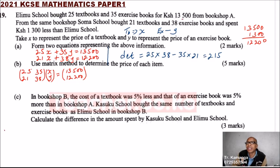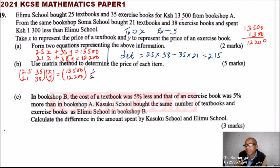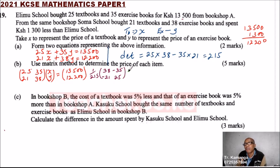The inverse of a matrix is 1 over the determinant, which is 1 over 215, times the bracket. You interchange the elements of the main diagonal — so here we have 38 and here we have 25 — and introduce a minus sign to the other diagonal: minus 35 and minus 21.